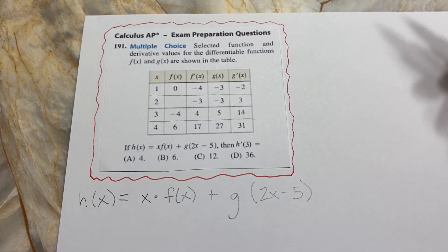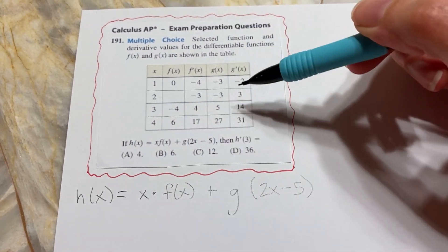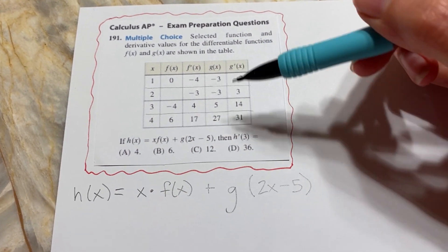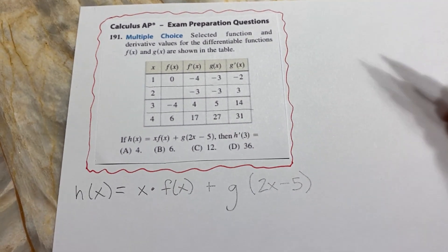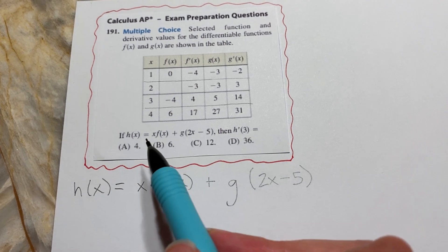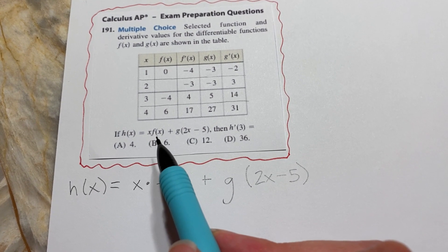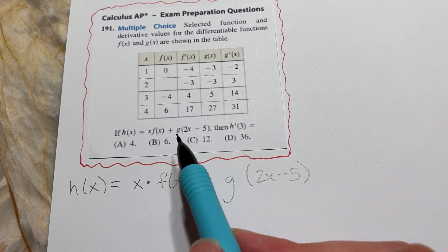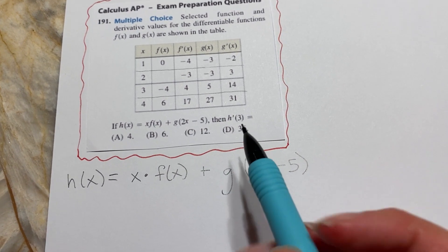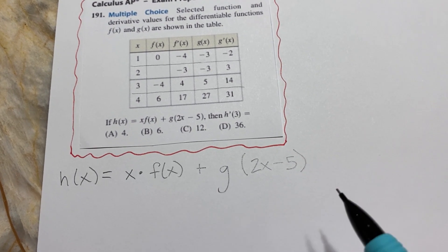In these kinds of AP exam practice problems, you're given a data table with a bunch of information that's not yet relevant — you're not sure how you're going to use that stuff yet. Then they give you abstract information about the function: h(x) = x·f(x) + g(2x - 5). They ask you about the derivative, so I just recopied h(x) here a little bit bigger.